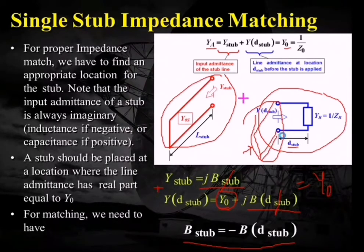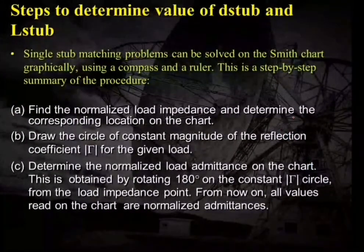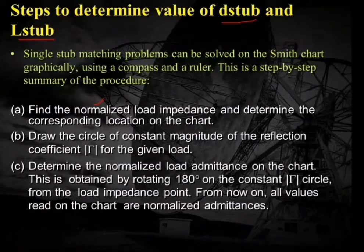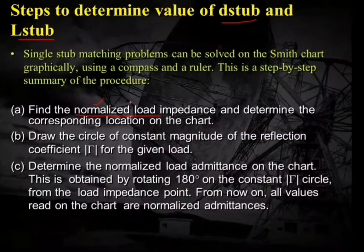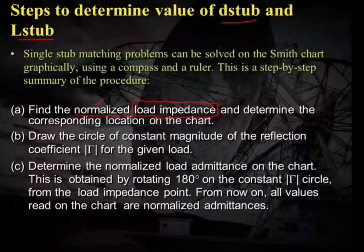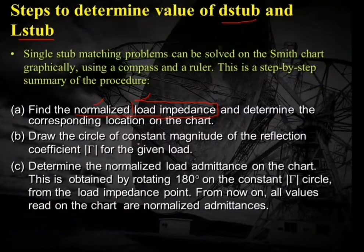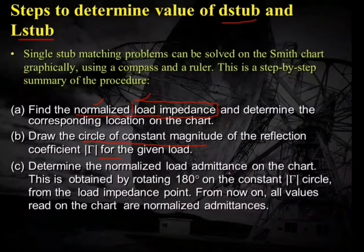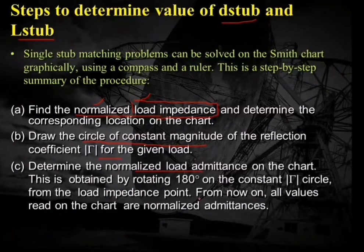To obtain D_stub and L_stub, we use the Smith chart. The steps are: first, find the normalized load impedance and determine the corresponding location on the chart, since the Smith chart deals with normalized values. Second, draw the circle of constant magnitude of the reflection coefficient for the given load — the VSWR circle. Third, determine the normalized load admittance on the chart, obtained by rotating the load impedance point by 180 degrees.